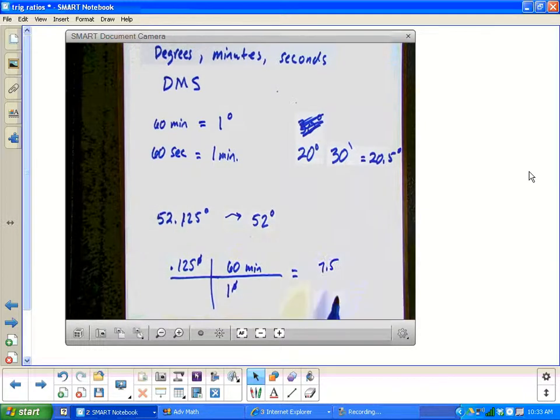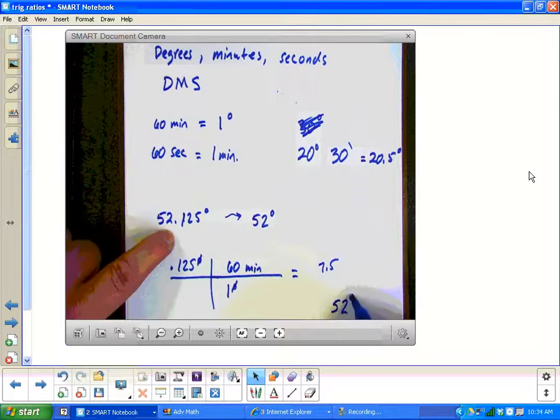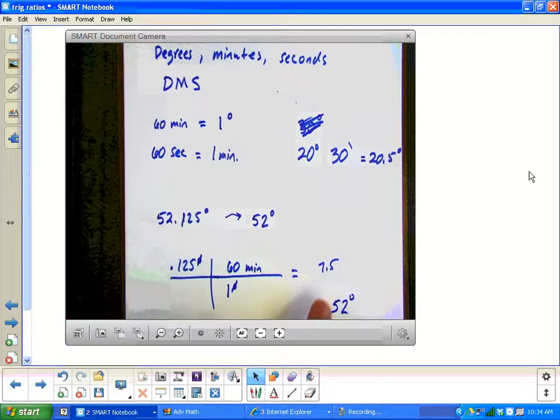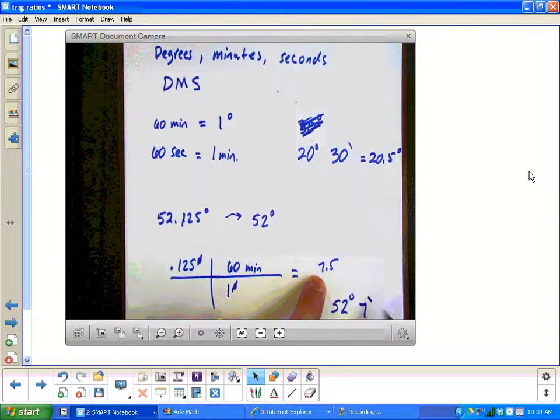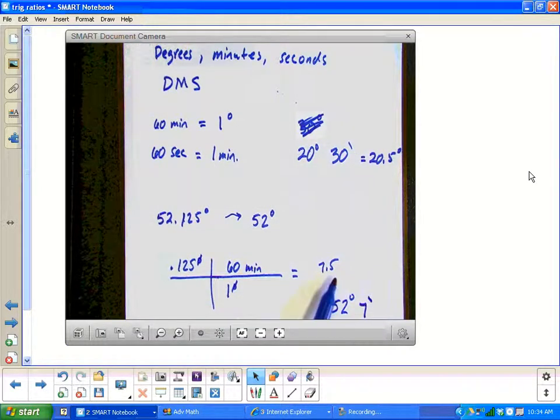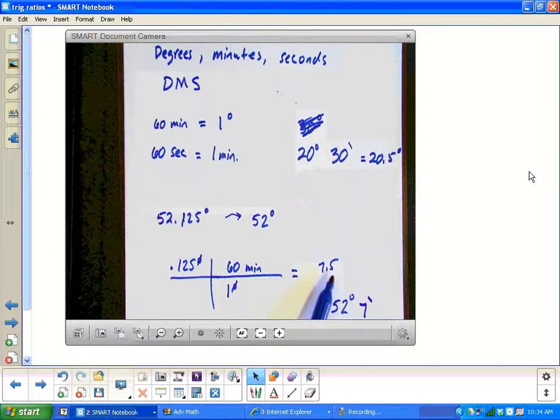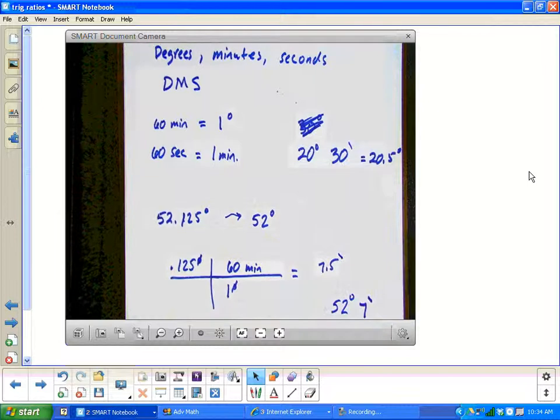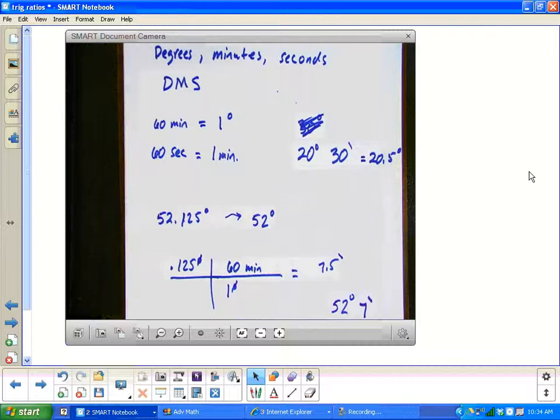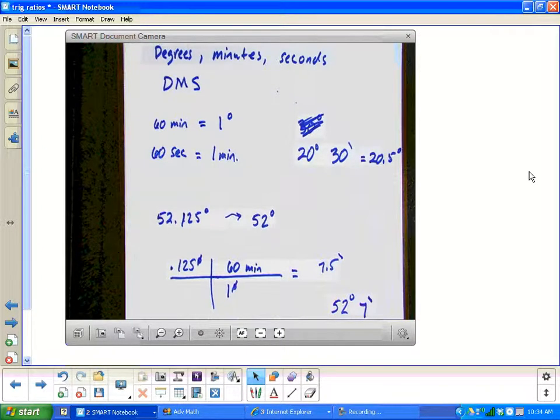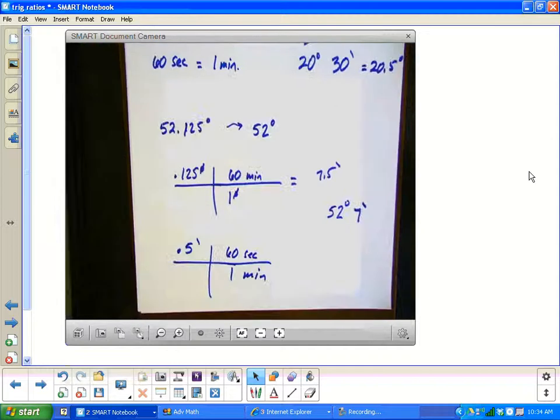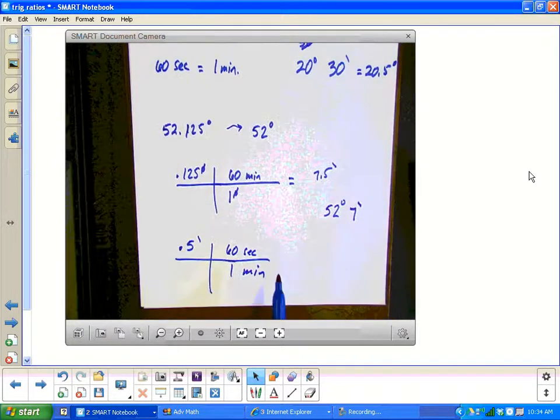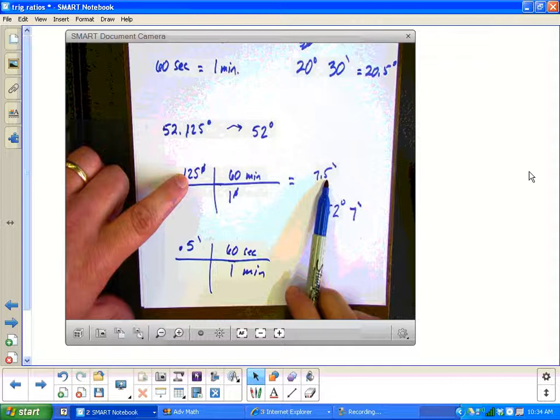So what we're looking at here so far is we would have 52 degrees. Now, we're not going to do the 0.5. We're just going to say 7 minutes. And what we're going to do, the 0.5, we're going to change into seconds. So keep in mind, this would be minutes. So if I had 0.5 minutes, there are 60 seconds in one minute. And so what you're doing is you're just taking the leftover parts of the minutes and changing them into seconds.